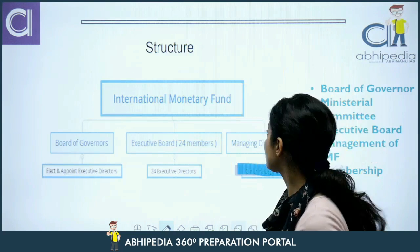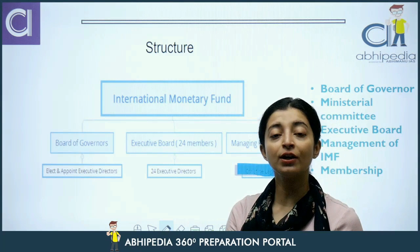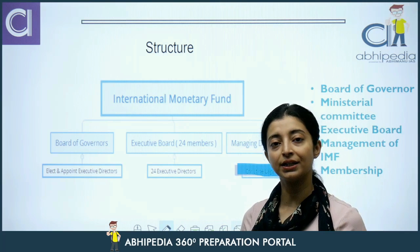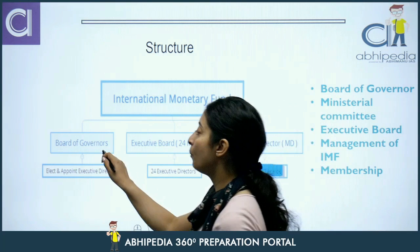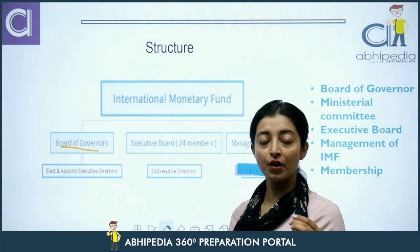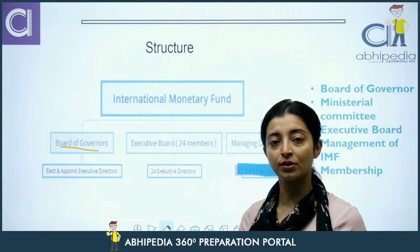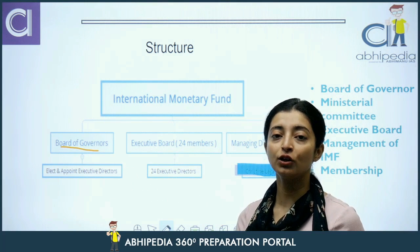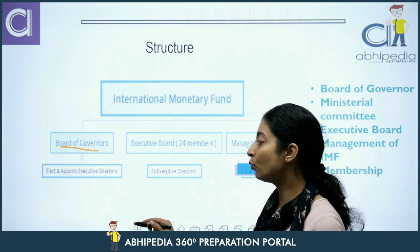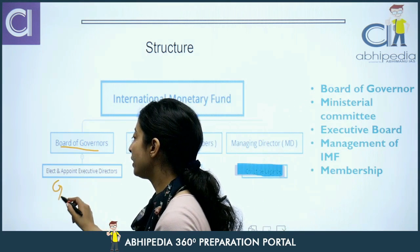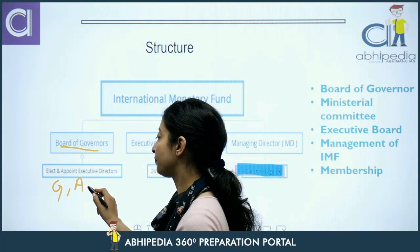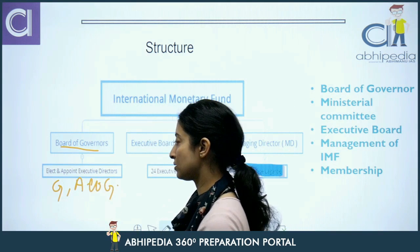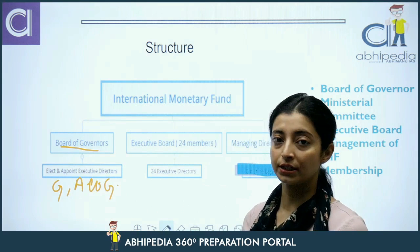Ab IMF ke structure ki baat karte hain — working components kya hain IMF ke? IMF ke structure mein sabse pehle hum baat karenge Board of Governors ki. Board of Governors ki representation hoti hai — sabse pehle, Board of Governors mein har ek country ke do representatives jaate hain: ek hota hai Governor, aur ek hota hai Alternate Governor.